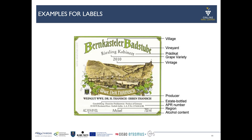This label reads Bernkasteler Badstube — Bernkastel is the village or town where the grapes come from, and Badstube is the vineyard. It is a Riesling Kabinett, so both the predicate and the grape variety are shown. The vintage is labeled, the producer is mentioned, and it refers to Gutsabfüllung, meaning it is estate-bottled by the producing winery.